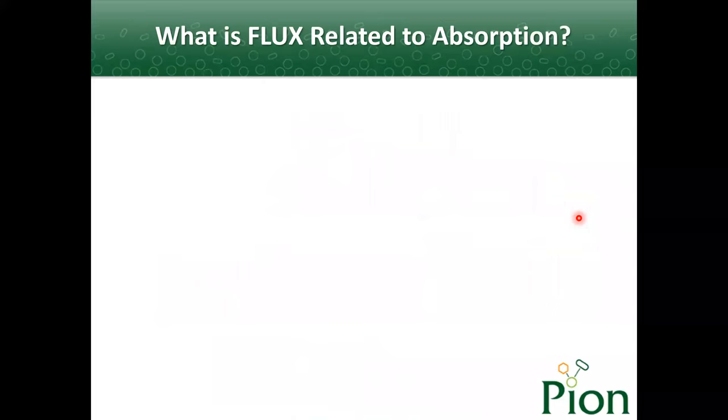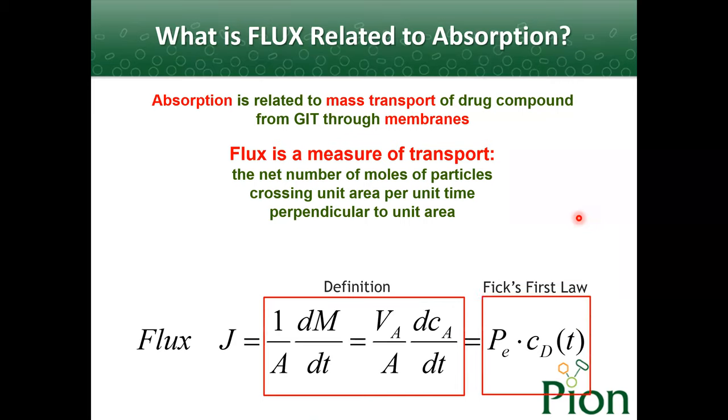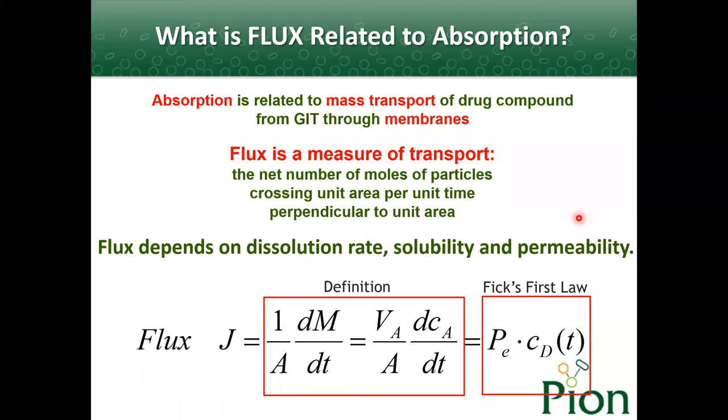So let's introduce flux. What is flux related to absorption? Absorption is related to mass transport of drug from GIT through membranes, and flux is a measure of transport. The definition for flux is the net number of moles of particles crossing unit area per unit time perpendicular to unit area. According to Fick's First Law, flux equals the effective permeability of the drug times the concentration at the permeated site, which means the flux depends on not only dissolution rate and solubility but also permeability.